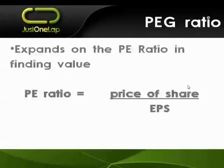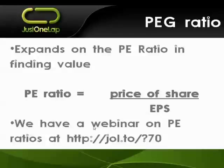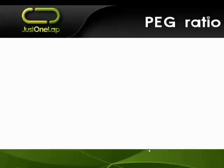The PEG expands on the PE ratio quite simply. There's a typo — it should say PEG ratio equals PE ratio, which is price of share divided by earnings per share. That's your PE, which is nice and basic. We did a webinar on that about a month ago — that's the short URL, that's why it looks a little bit funny.